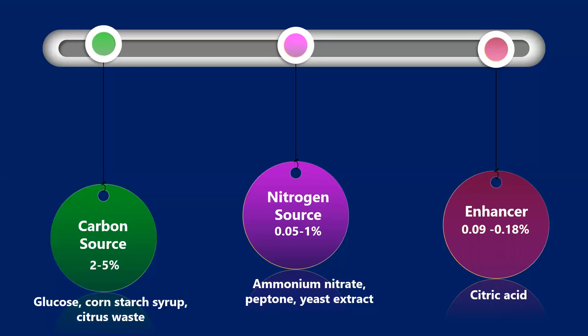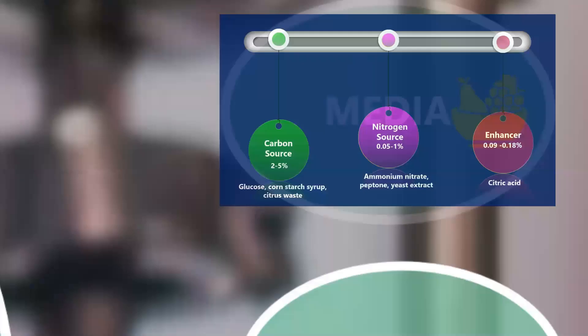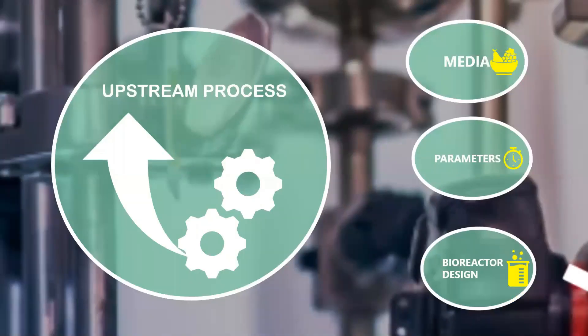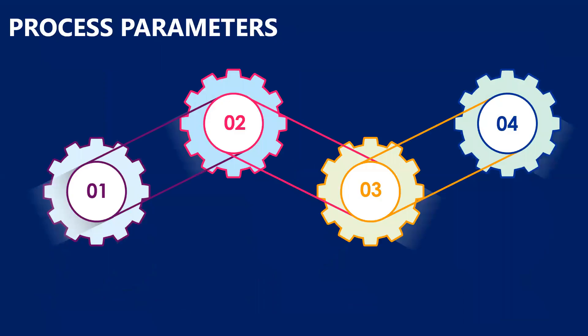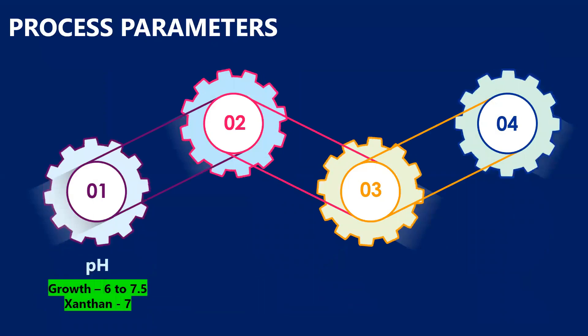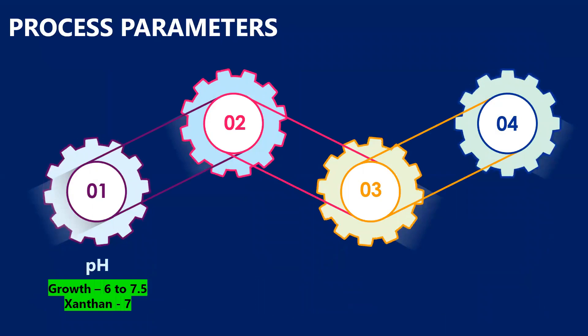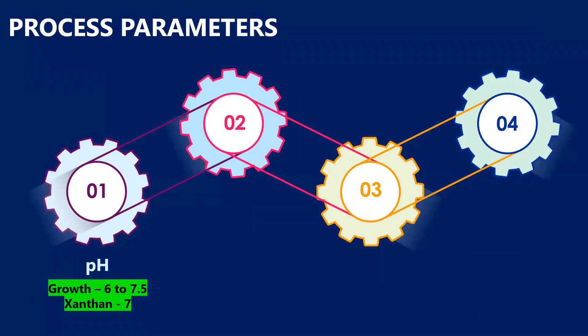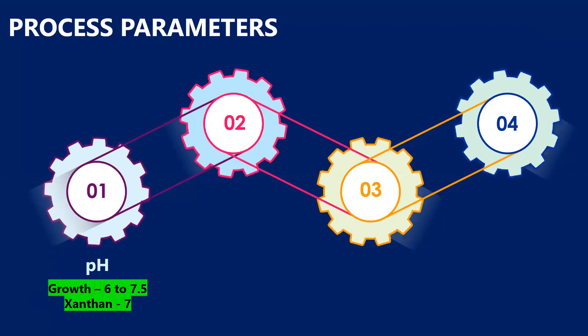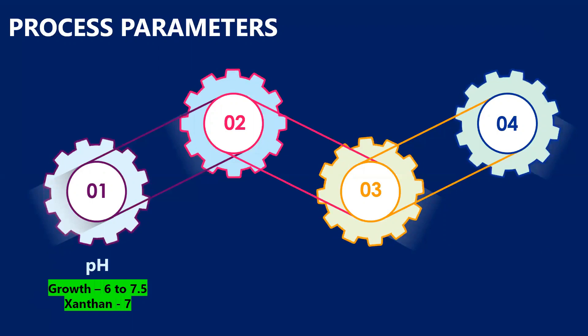Next, the process parameters. We are going to be talking about four main parameters. Firstly, that is the pH of the medium. The growth of Xanthomonas happens at a pH of 6 to 7.5, whereas the optimal pH for the production of xanthan is 7.